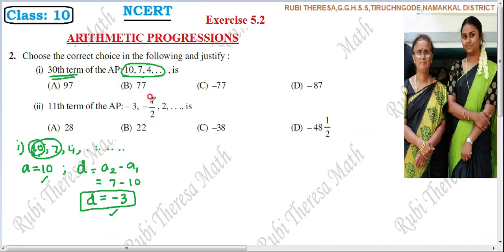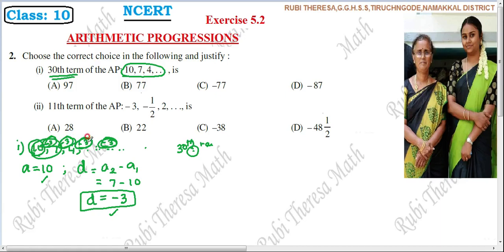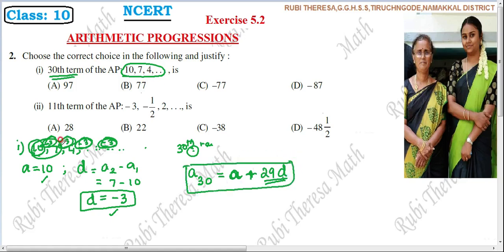Now, using the formula to find the 30th term: rather than adding minus 3 step by step from the first term, we use the simplified formula. To find the nth term of the sequence, we use: A_n equals A plus (n minus 1) into D. So the initial term plus (n minus 1) times D gives any term in the sequence.